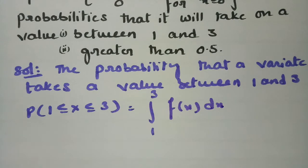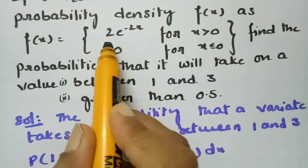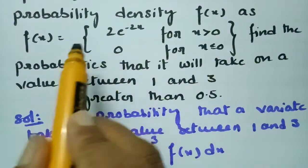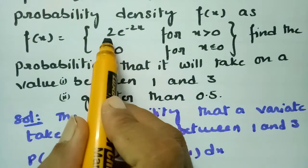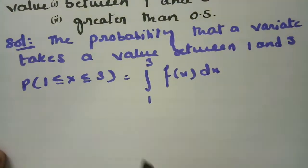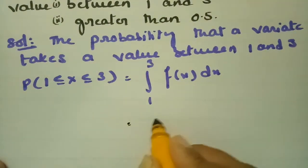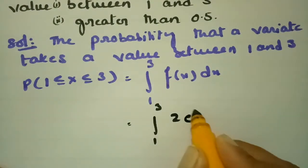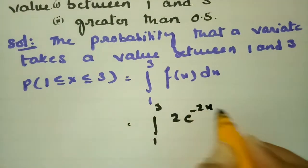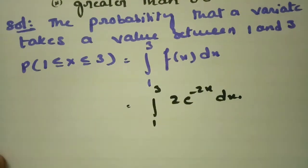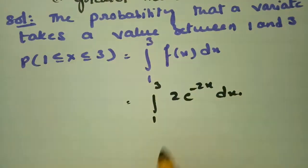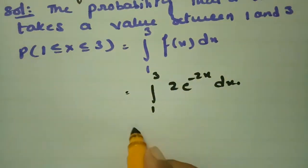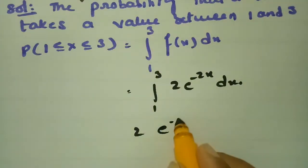Now we have to calculate the integral from 1 to 3 of f(x) dx. Since f(x) = 2e^(-2x), this becomes the integral from 1 to 3 of 2e^(-2x) dx. The constant 2 can be factored out.